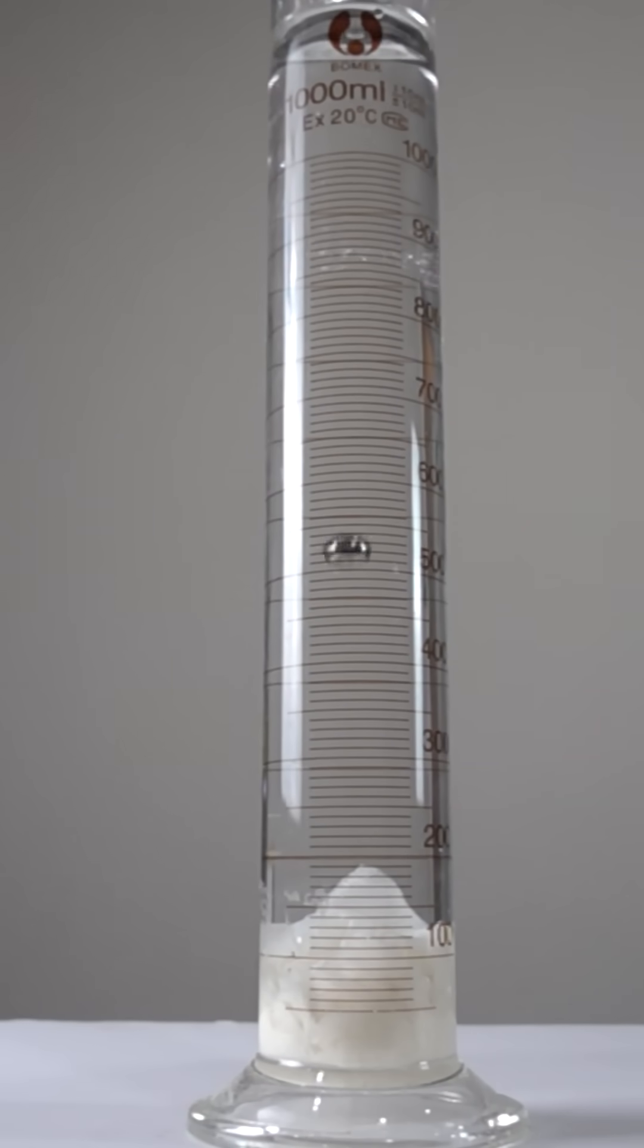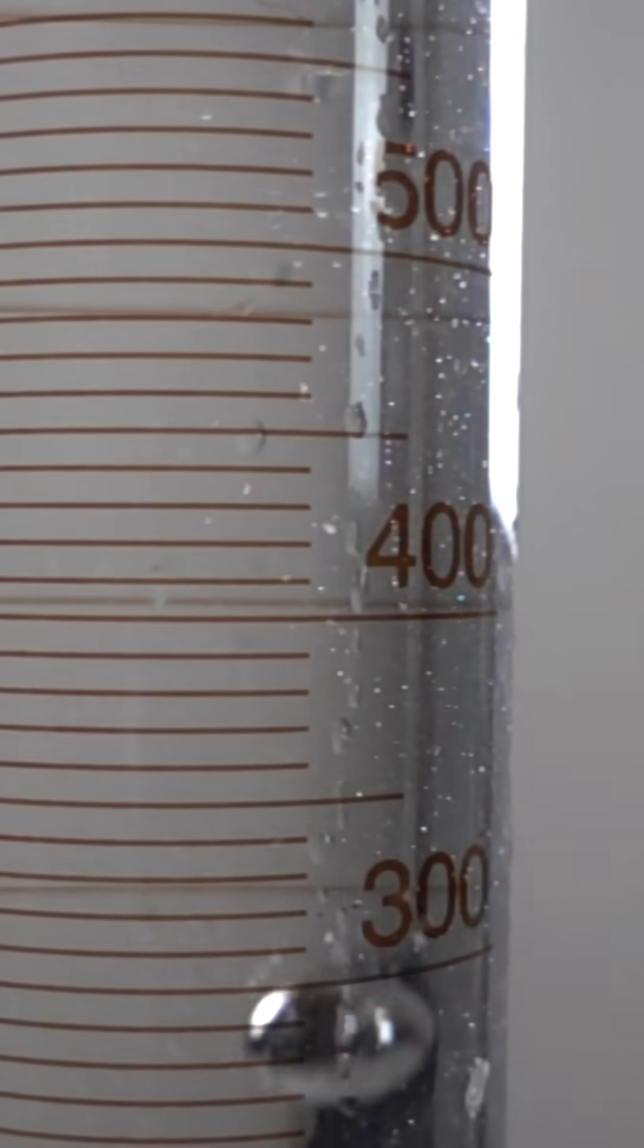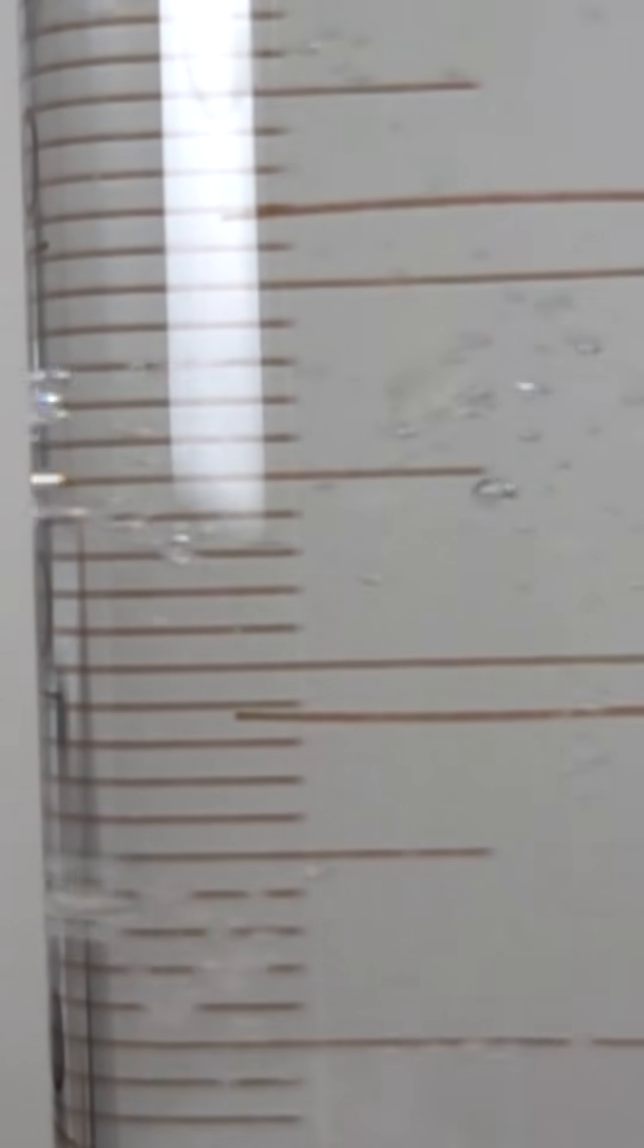If you take a normal sphere and drop it in water, you'll see that it doesn't entrain any air behind it. And so you don't get a projectile that looks like a torpedo or anything, you just get a ball falling through water with a little tiny bit of air bubbles around it.